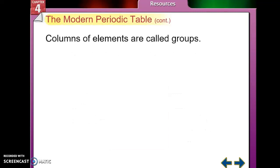Columns of elements are called groups. There are 18 groups on the periodic table. The group number is at the top of the column. Rows are called periods. There are seven periods on the periodic table, and they go from left to right. The first period only has hydrogen and helium in it. The second period has lithium, beryllium, and then you go all the way across to boron, carbon, nitrogen, oxygen, fluorine, and neon.